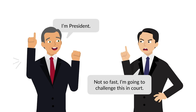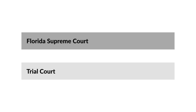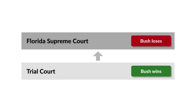Gore challenged the results of the manual recount. The trial court rejected Gore's challenge entirely, holding that Gore had failed to meet his burden of proof. The Florida Supreme Court reversed this result in part, holding that Gore had satisfied his burden of proof with respect to the results in Miami-Dade and Palm Beach counties.